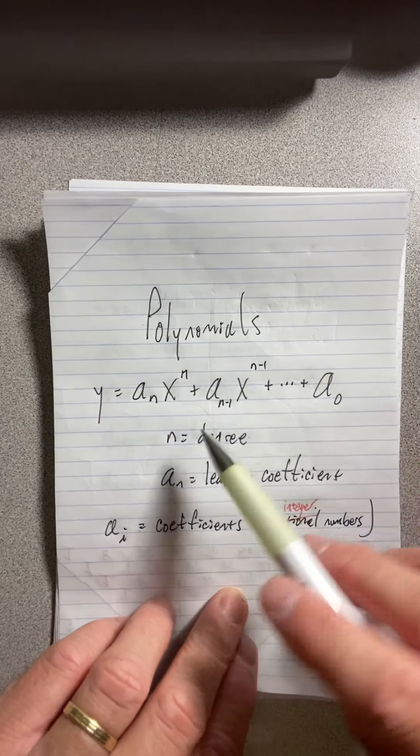You've already dealt with lines and quadratics, but there are higher degree polynomials like this one. This is a third-degree polynomial. Third-degree polynomials are called cubics. It's a third-degree polynomial.